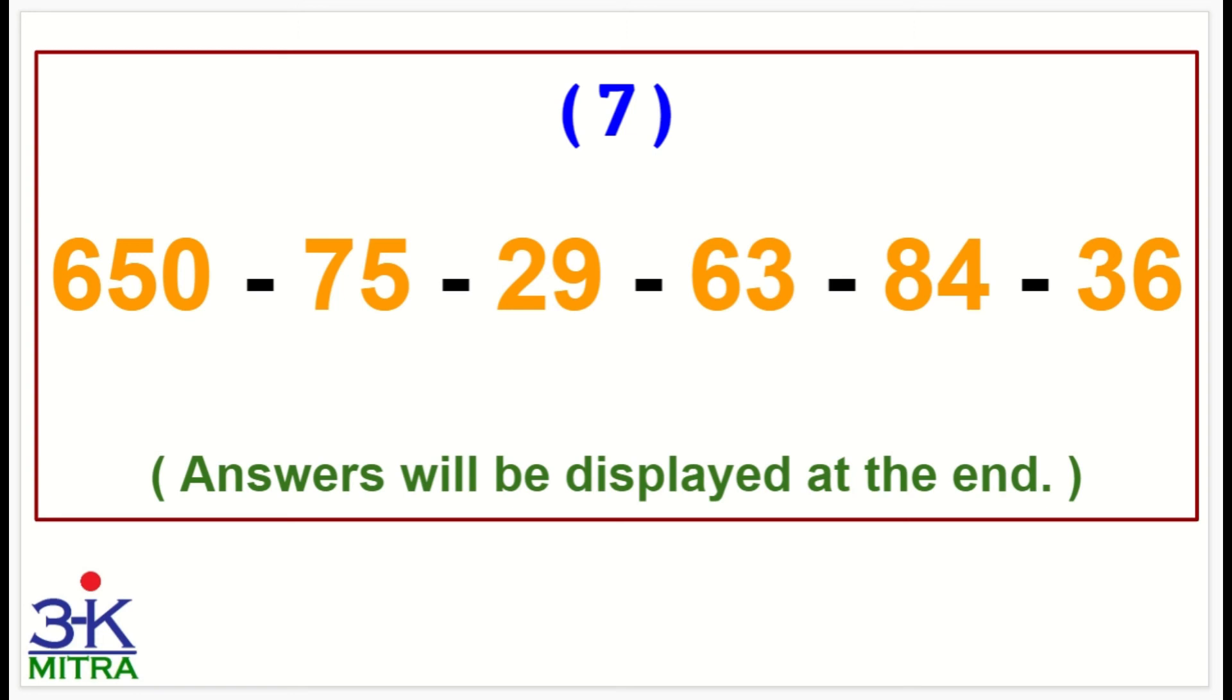Moving to the eighth sum now. 650 to start, then minus 68, minus 25, minus 24, minus 77, minus 67. That is, write down the answer.